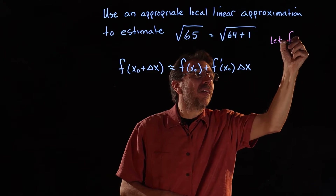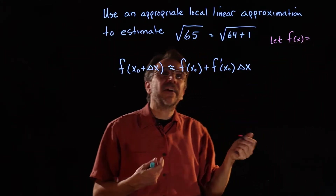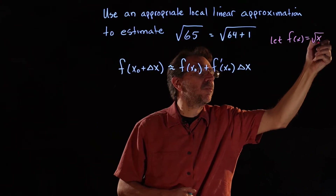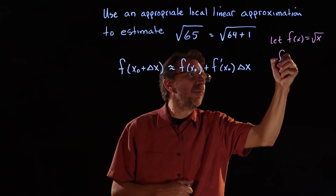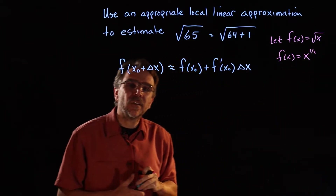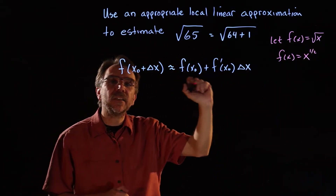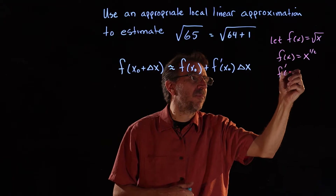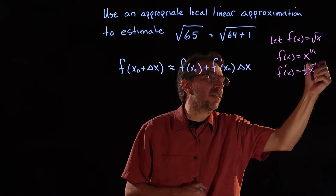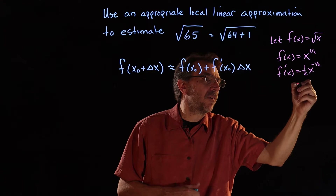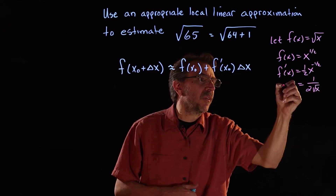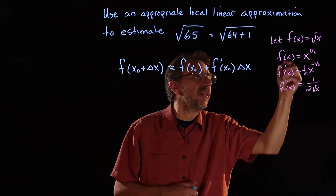The first thing you need to do is identify the function. The function here is the square root, so f of x equals the square root of x, which we rewrite as x to the one-half power so we can find the derivative. Using the power rule, f prime of x equals one-half x to the minus one-half, which is 1 over 2 times the square root of x.